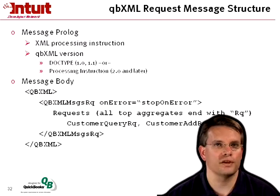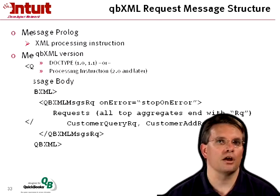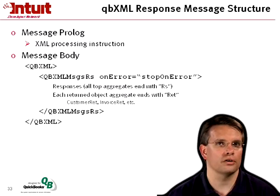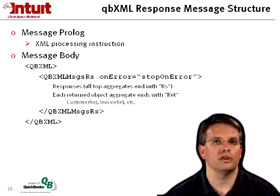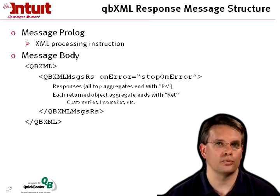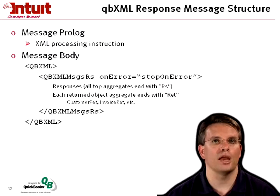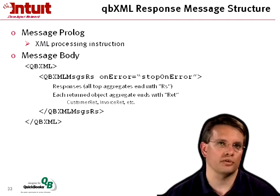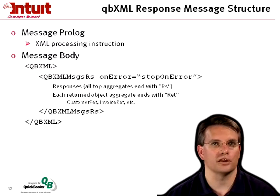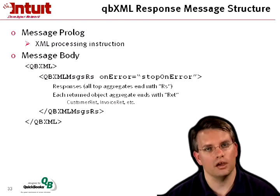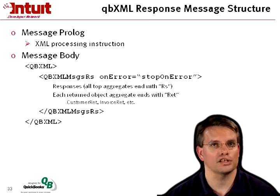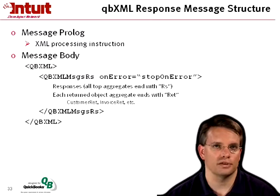The response is very similar. Instead of a messages RQ, we get a messages RS for response. The responses are within that envelope — one response for each request sent — and the top-level aggregates end in RS instead of RQ. Within an RS, you'll find the individual RET objects: a customer RET, an invoice RET, and so forth.